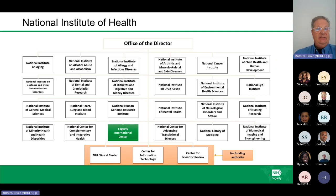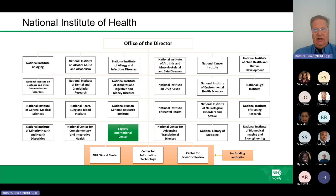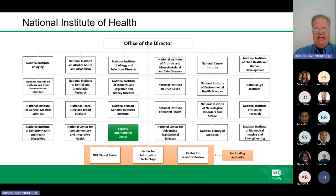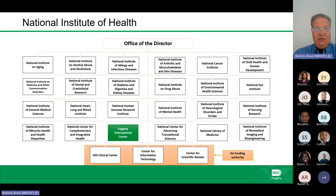This slide shows the NIH and its 27 institutes and centers. Fogarty International Center is one of the institutes and centers at NIH. The bottom three have no funding authority to make grant awards: the Clinical Center, which is the hospital on the NIH campus; the Center for Information Technology; and the Center for Scientific Review, which reviews about 80% of the 60,000 applications received by NIH each year.